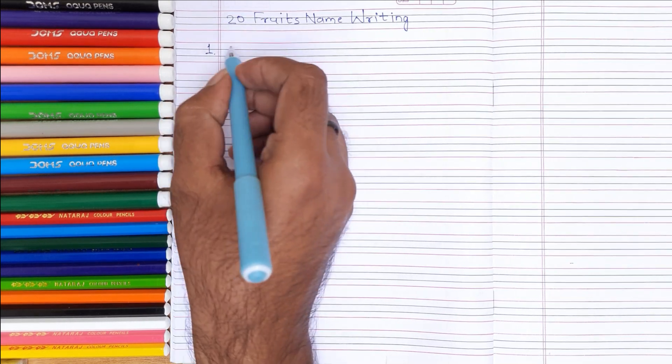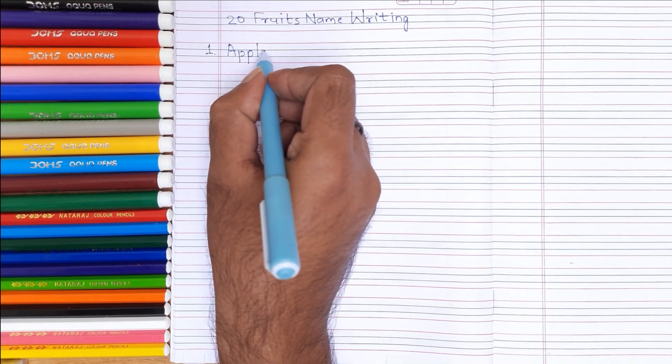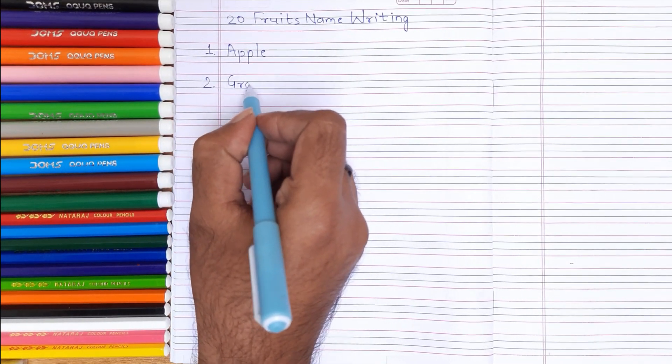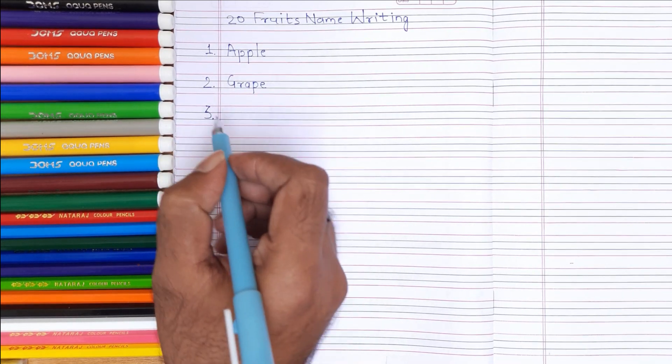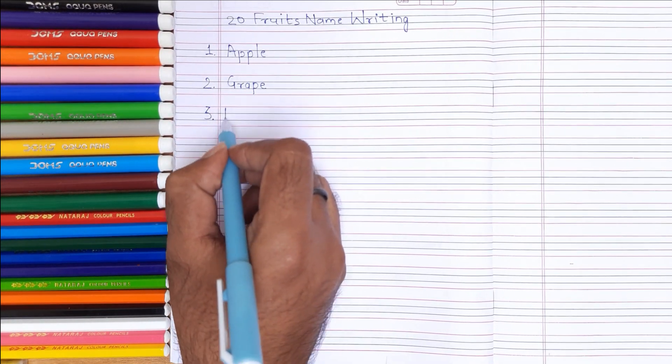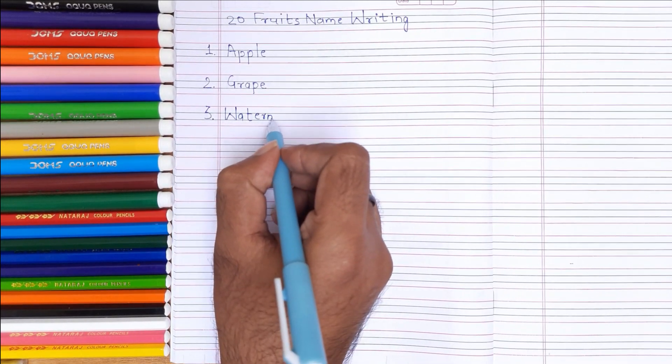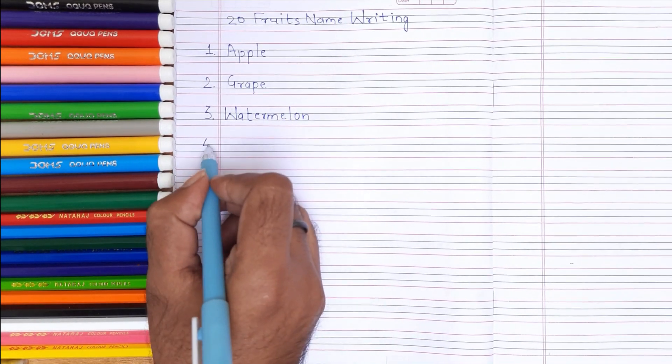1. A-P-P-L-E Apple. 2. G-R-A-P-E Grape. 3. W-A-T-E-R-M-E-L-O-N Watermelon.